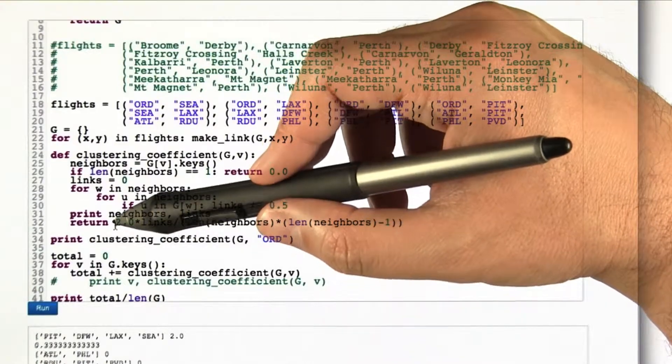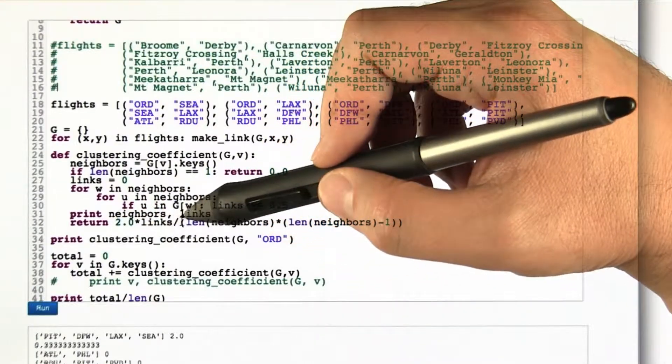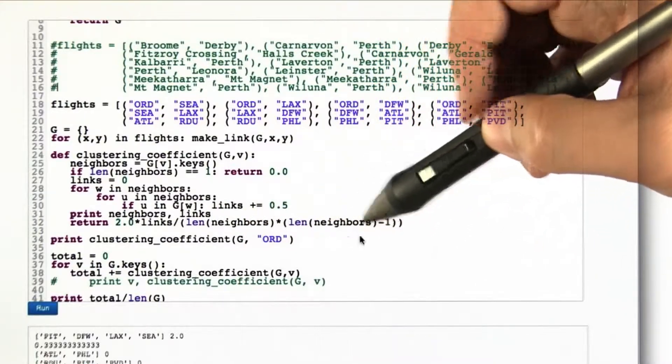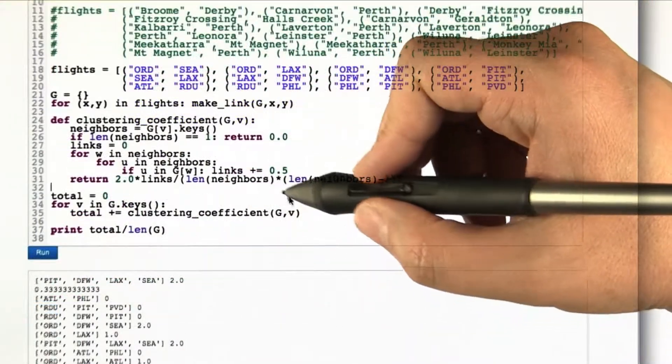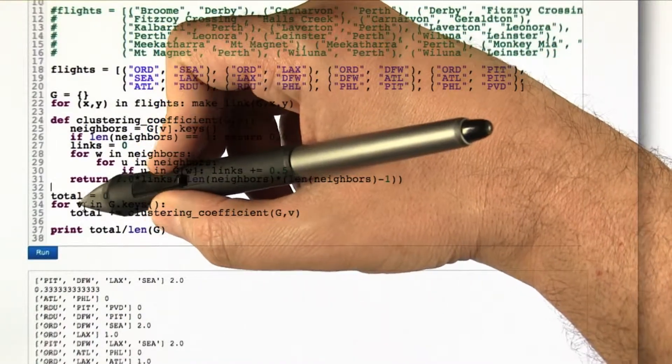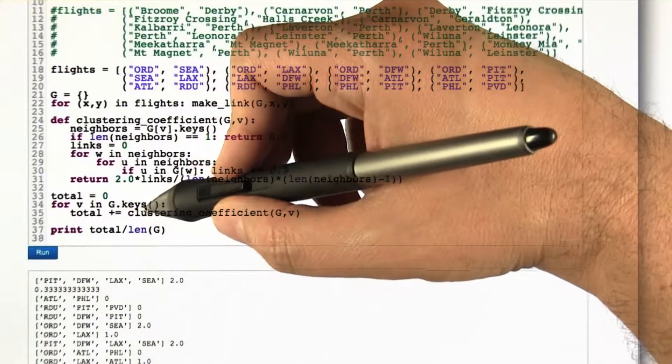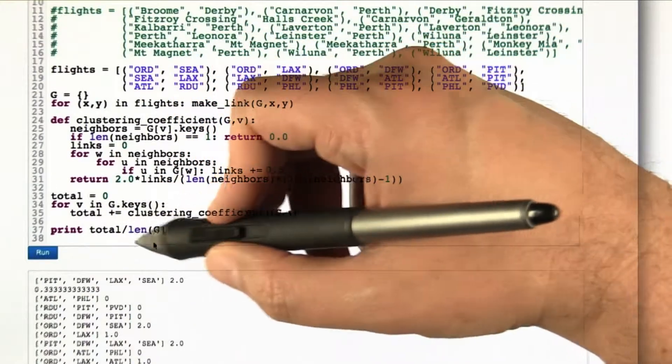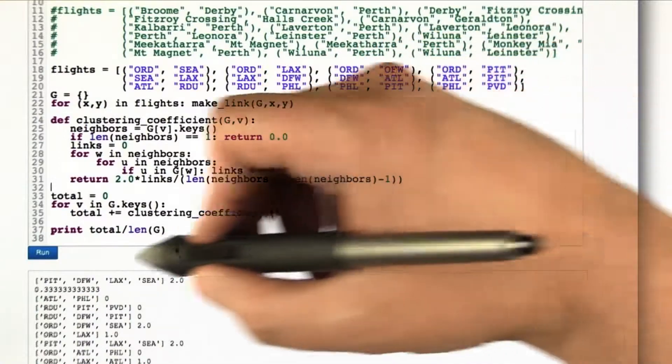And then I apply the formula: 2 times the number of links divided by length of neighbors times length of neighbors minus 1. So now that we can compute the clustering coefficient for any node v, we can actually loop through all the nodes in the graph computing the total of their clustering coefficients and then divide by the number of nodes to get the clustering coefficient for the whole graph.